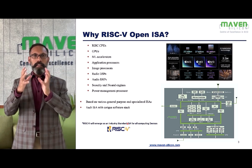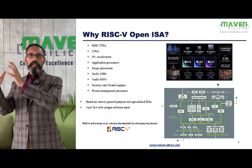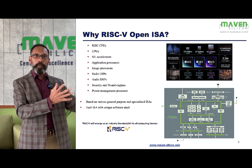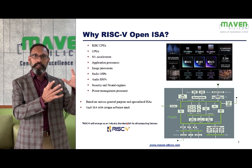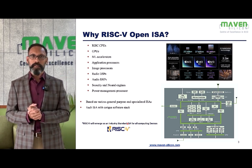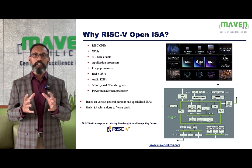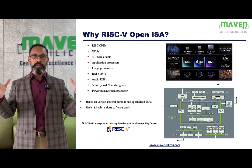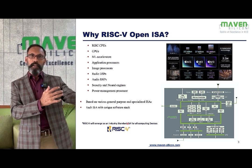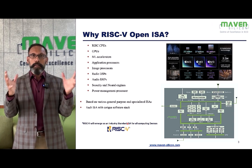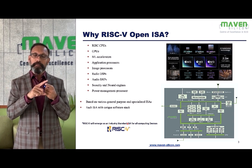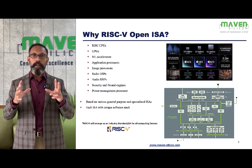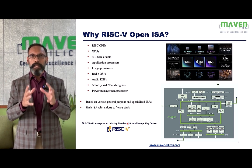RISC processors are mostly based on general purpose ISAs — could be ARM or RISC-V. But when dealing with other processors like accelerators, coprocessors, or application processors, they have to deal with specialized ISAs. Different vendors provide different kinds of processors, each based on a particular ISA, so engineers will have to deal with multiple vendors with different licensing schemes and different software stacks. This is going to be very complex.